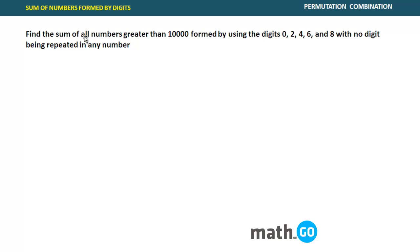It says find the sum of all numbers greater than 10,000 formed by using digits 0, 2, 4, 6, 8 with no digits being repeated. Same problem, but see what is the problem here? There are 5 digits in total. You want to find numbers which are greater than 10,000 and obviously, if you start from 2, you will have numbers which are greater than 10,000 because it's a 5 digit number that you will form.